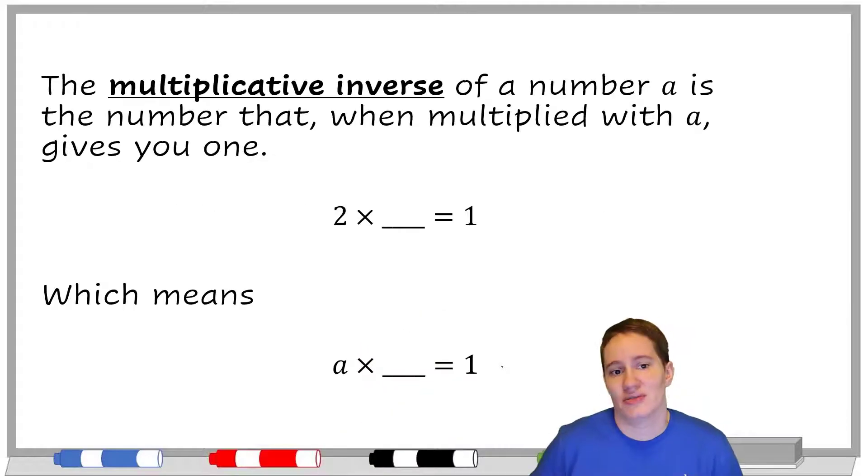The multiplicative inverse of a number a, which I realize a is not a number, but this is a thing we do in math where we represent things as letters so that we can talk about it for any number instead of specifying a specific number. So the multiplicative inverse of a number a is the number that when multiplied with a gives you one.